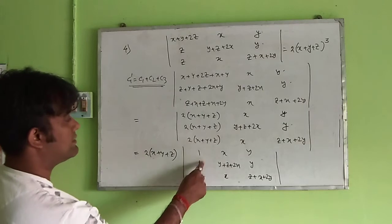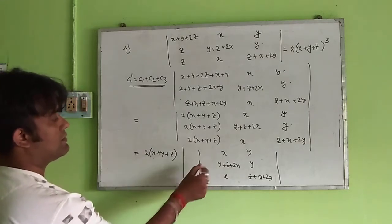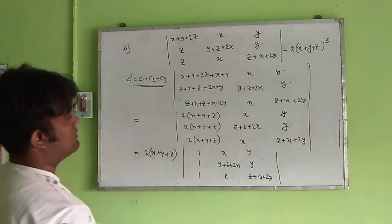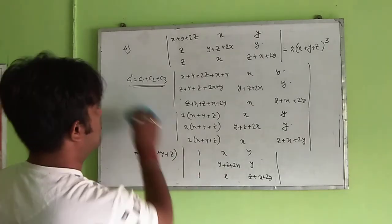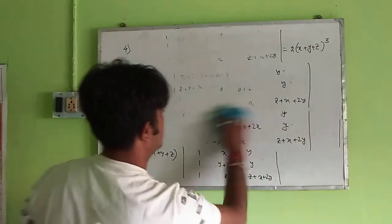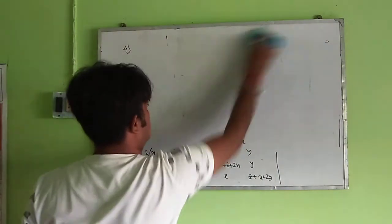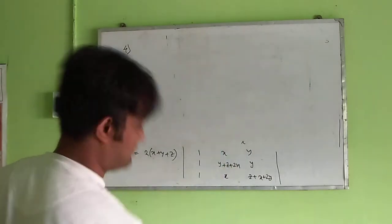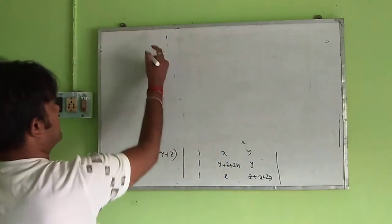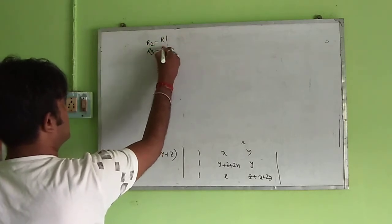Now, we target this and this, this position and this position. We must take it, we must want 0 in that position. To make it 0, we must do this operation: r2 minus r1 and r3 minus r1.